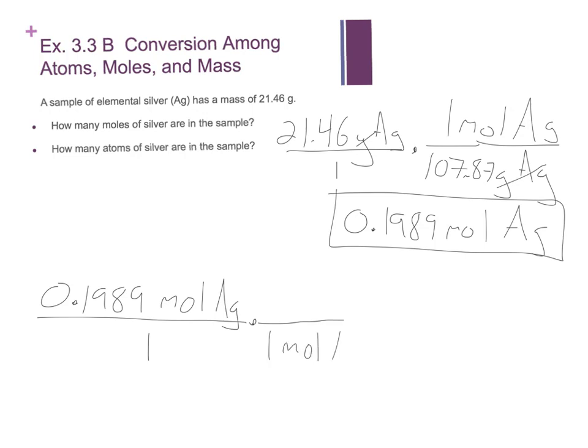That's always going to go to Avogadro's number. So 1 mole of silver, 6.02 times 10 to the 23rd. And we're talking about atoms in this case. So atoms of silver. We multiply those guys out.